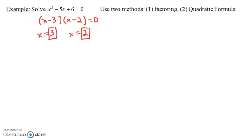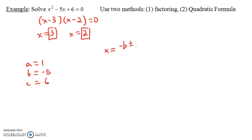That was pretty simple as long as you know how to factor. Now using the quadratic formula is a little messier. The first step is always to identify a, b, and c. Our equation is of the form ax squared plus bx plus c equals 0, so here a equals 1, b equals negative 5, and c equals 6. It's helpful to write the quadratic formula out a few times when you're first memorizing it.